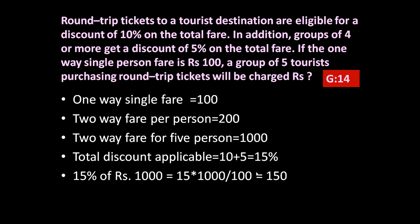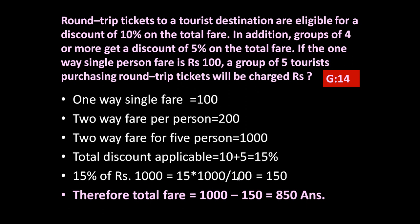So a total discount of rupees 150 is applicable. Therefore, total fare is 1000 minus discount of 150, which equals rupees 850. The answer is rupees 850 — that is what five tourists have to pay for round trip tickets.